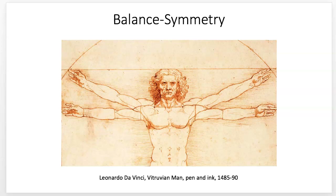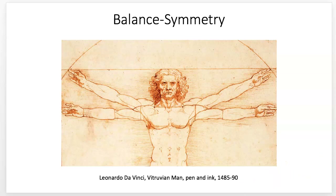Symmetrical balance — a great example is Leonardo da Vinci's Vitruvian Man. It's basically identical shapes repeated on either side of a central axis, which could be horizontal but is mostly thought of as vertical. Each element has an exact repetition. It's also called formal balance because it can feel very static and formal, with mirroring on the left and right. Our bodies are actually nearly symmetrical, so we're used to this — it has a reassuring quality. It's most common in architecture, and true formal balance is rare in painting.